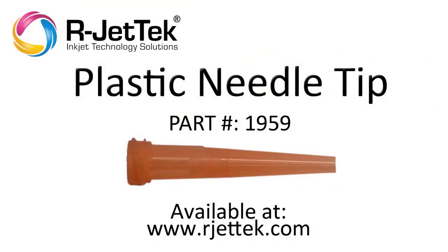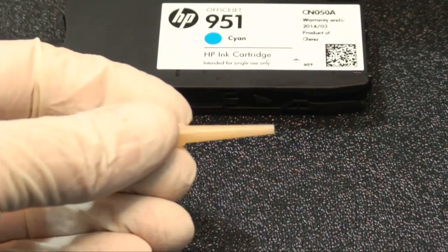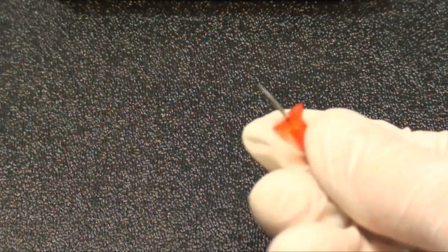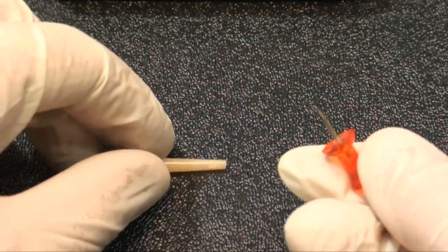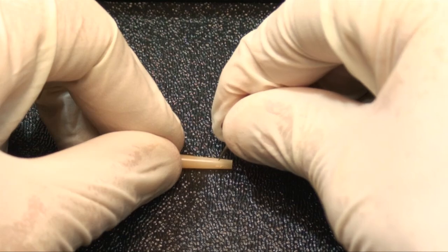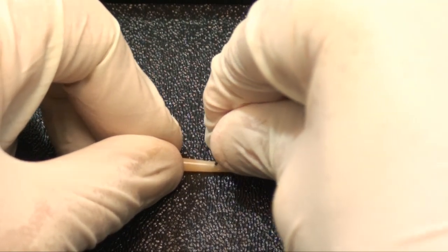The second needle we will look at is the plastic needle tip. The only setup needed to use the kit is to punch holes in the needle tip about 1/8th of an inch from the tip of the needle. Use a thumbtack to punch the holes, one on each side, as shown here.